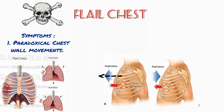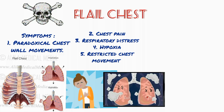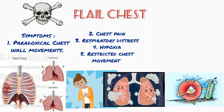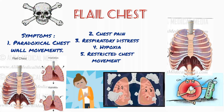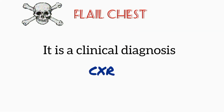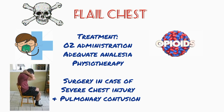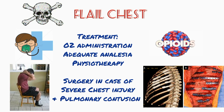On inspiration the chest wall expands, but the flail segment is displaced inwards. In addition to paradoxical chest wall movements, the patient will have chest pain, respiratory distress, and hypoxia due to pulmonary contusion and restricted chest wall movement due to pain. Pulmonary contusion as well as pneumothorax and hemothorax may also be associated with flail chest. Just like tension pneumothorax, it is a clinical diagnosis so chest x-ray is not the primary tool, and treatment consists of oxygen administration, adequate analgesia, and physiotherapy. In case of severe chest injury and pulmonary contusion, surgery should be performed.